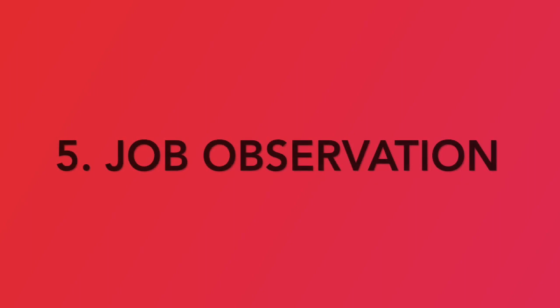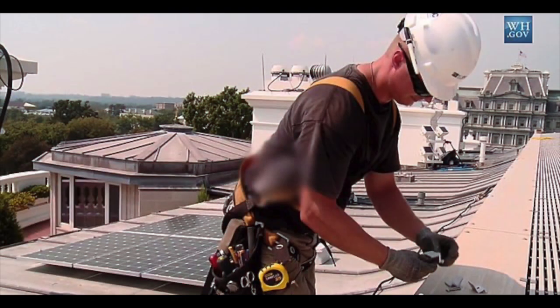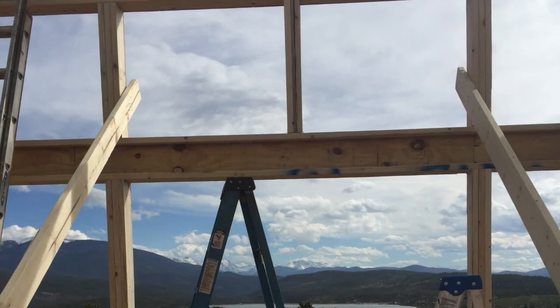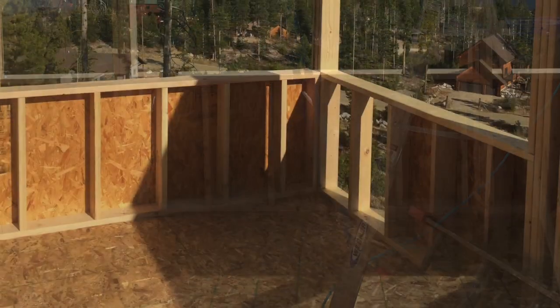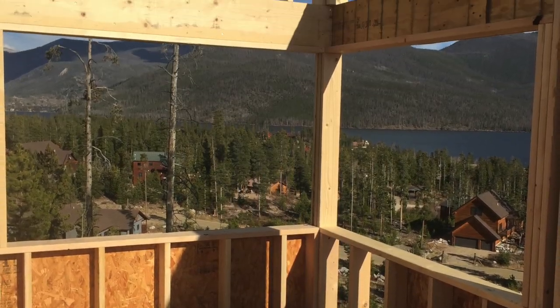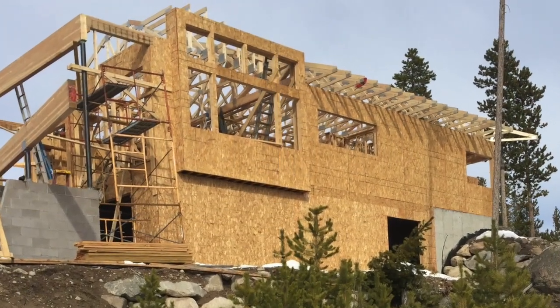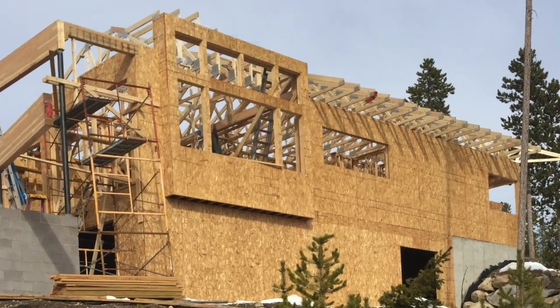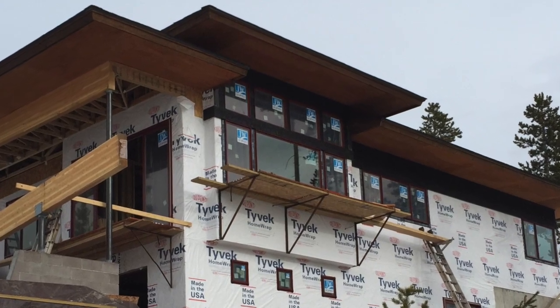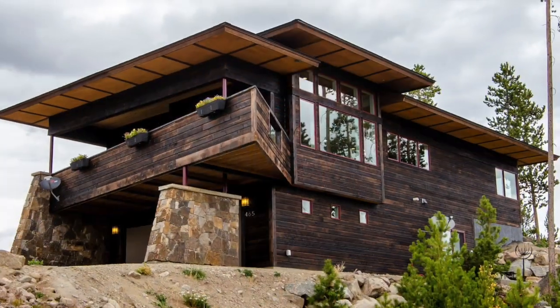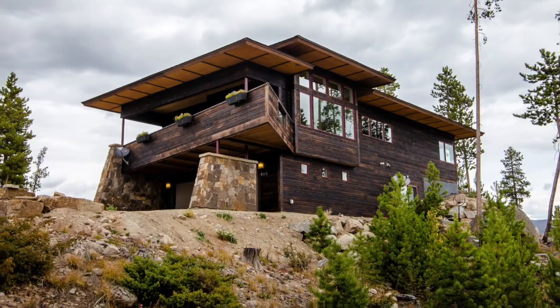When construction finally starts, the architect is usually involved in job observation, making site visits to review that the work is progressing in a manner that supports the design intentions. The architect is not required to be on site at all times, so the means and methods of construction are outside of his purview. However, questions do arise that at times may require a site visit to confer with the client or the builder.